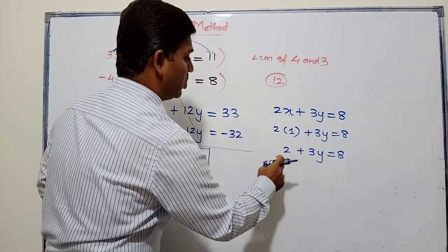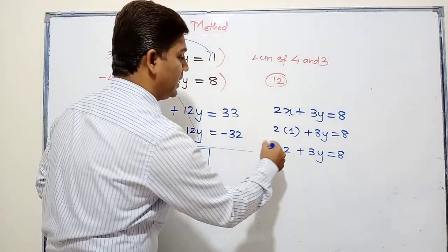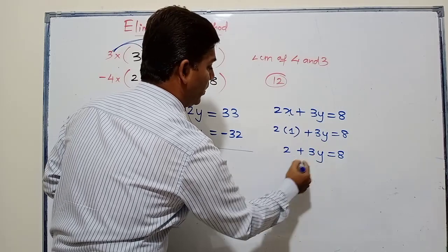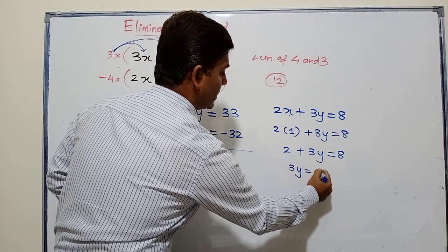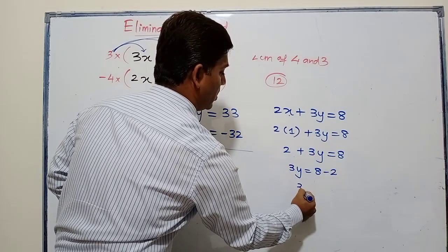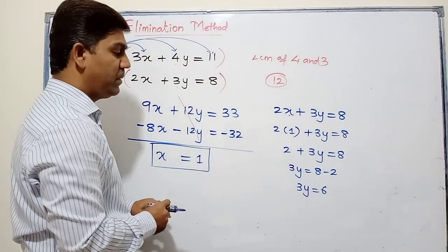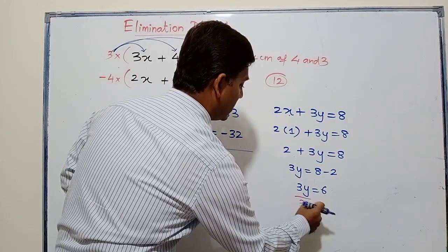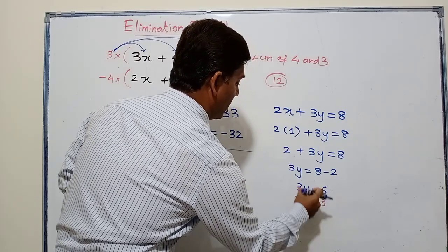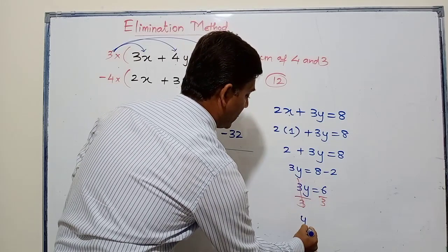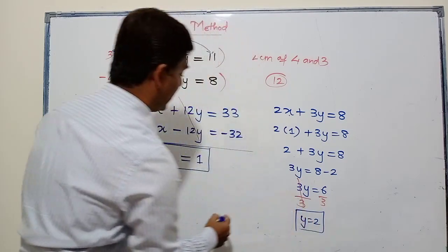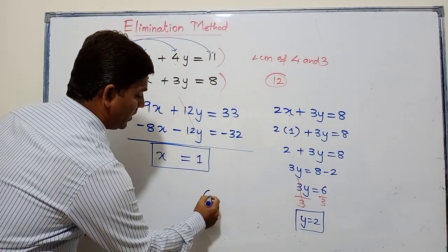I need to solve this equation. Let's shift directly - plus 2 moves to the other side, so 3y equals 8 minus 2. 3y equals 6. Now 3 and y are in multiplication, so I divide both sides by 3. This gets cancelled, and I get y equals 2.